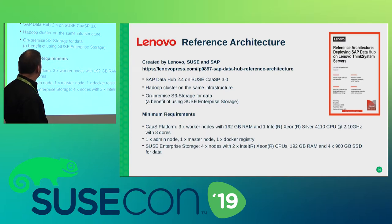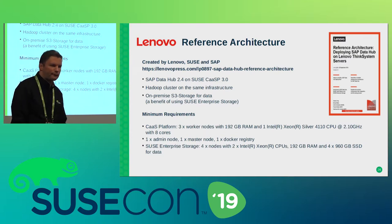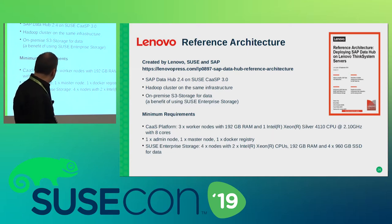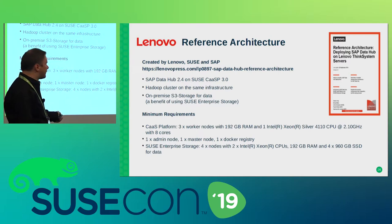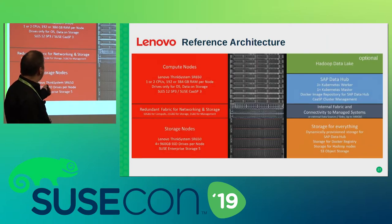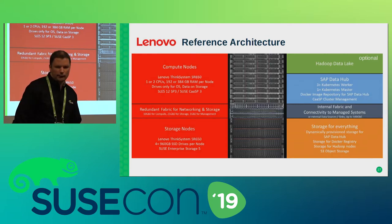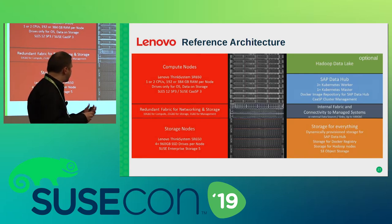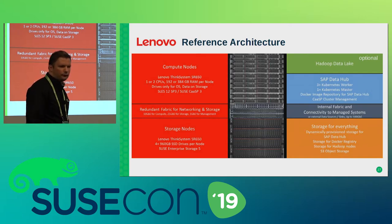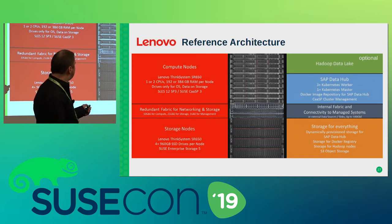This is the Lenovo reference architecture done together with Lenovo and SAP, based on SAP Data Hub 2.4 with an optional Hadoop cluster on the same infrastructure, using S3 object storage from SUSE Enterprise Storage. They have higher minimum requirements: six Hadoop nodes and 192 GB of RAM. The rack setup shows a 19-inch rack with four storage nodes with many disks, switches interconnecting everything, six nodes for SAP Data Hub, five for the CASP installation, one for the Docker registry, and four nodes for the Hadoop data lake.